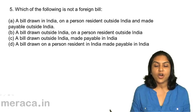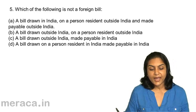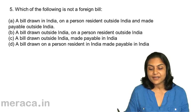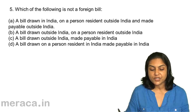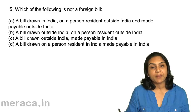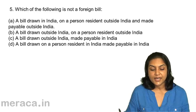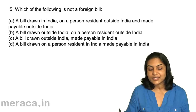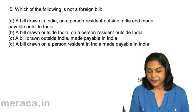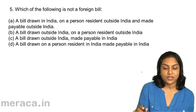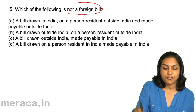Next. Which of the following is not a foreign bill? A. A bill drawn in India on a person resident outside India and made payable outside India. B. A bill drawn outside India on a person resident outside India. C. A bill drawn outside India made payable in India. D. A bill drawn on a person resident in India made payable in India. Which of the following is not a foreign bill?